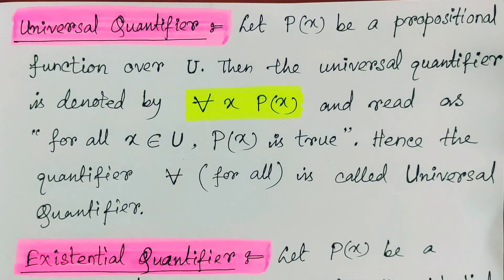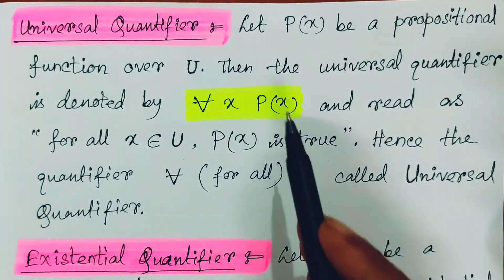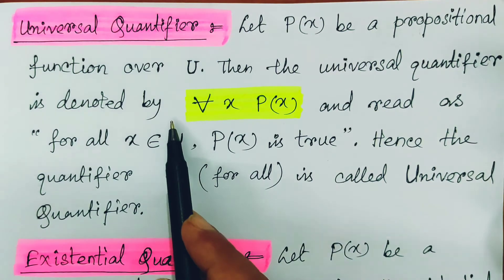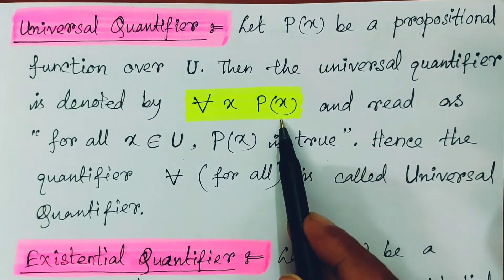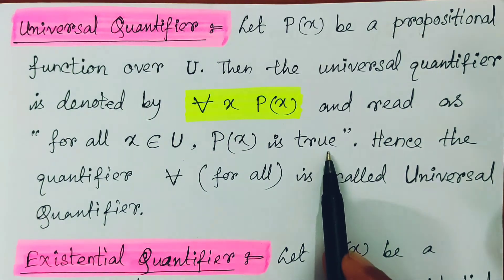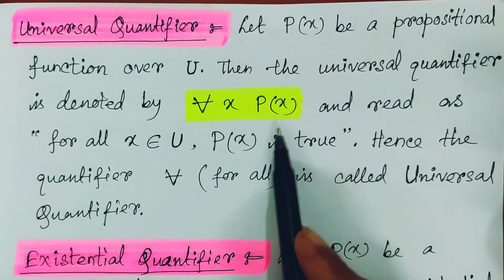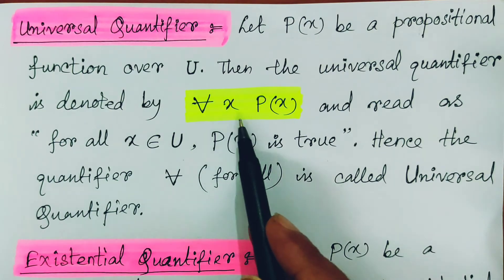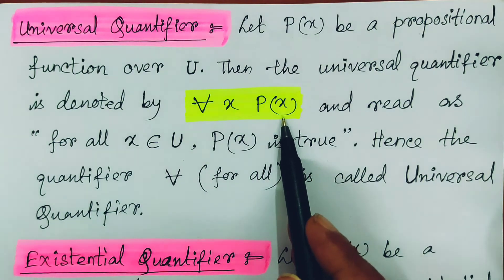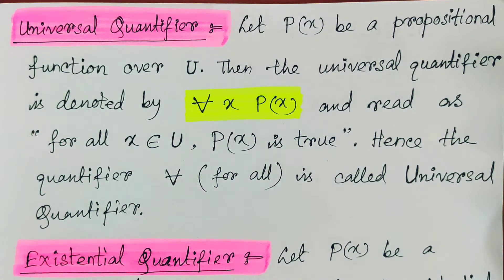For the universal quantifier, let P(x) be a propositional function over U, where U is the universal set. Then the universal quantifier is denoted by '∀x P(x)' and is read as 'for all x belonging to U, P(x) is true.' So the universal quantifier '∀x P(x)' means that whatever x is in U, P(x) is true for all of them. The symbol ∀ is called the universal quantifier.